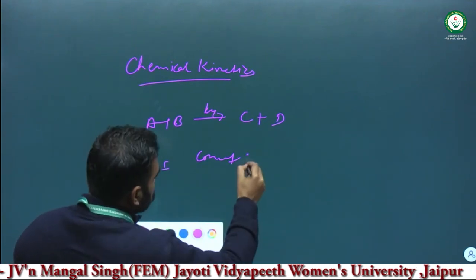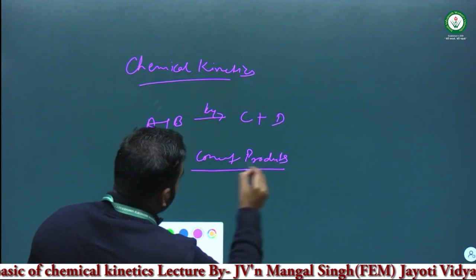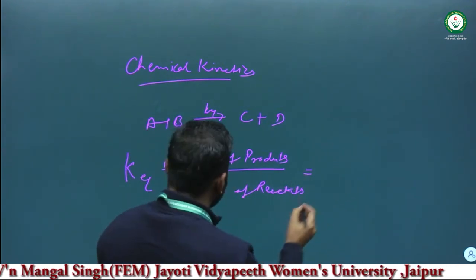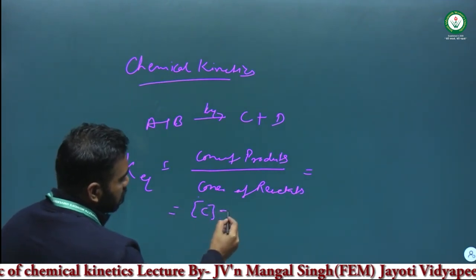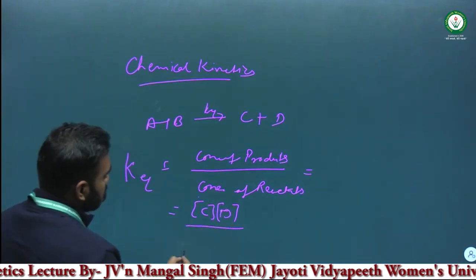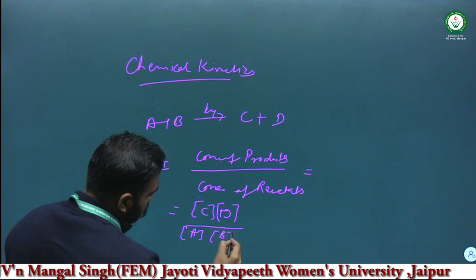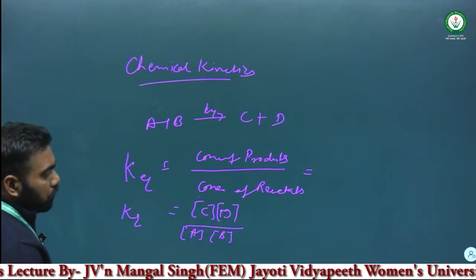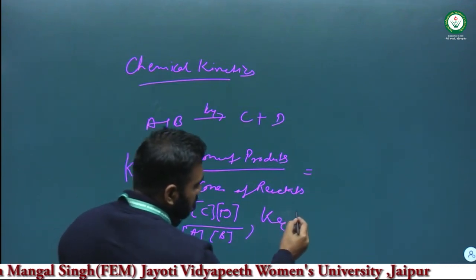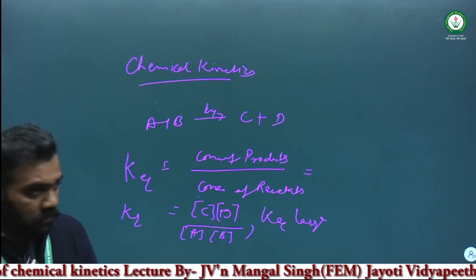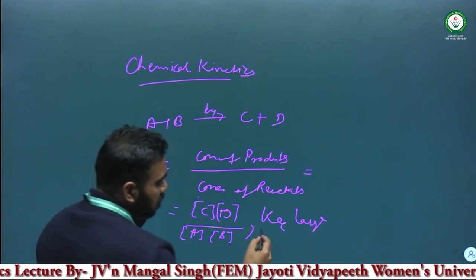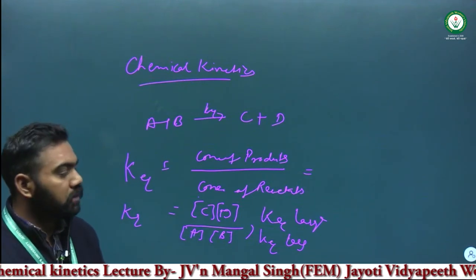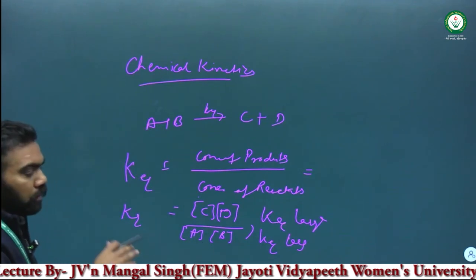The equilibrium constant K is defined as the concentration of products divided by the concentration of reactants. So K equilibrium equals concentration of C times concentration of D upon concentration of A times concentration of B. Based on K equilibrium, we define the extent of reaction: if K is large, the reaction proceeds more in the forward direction; if K is small, the reaction favors the backward direction.